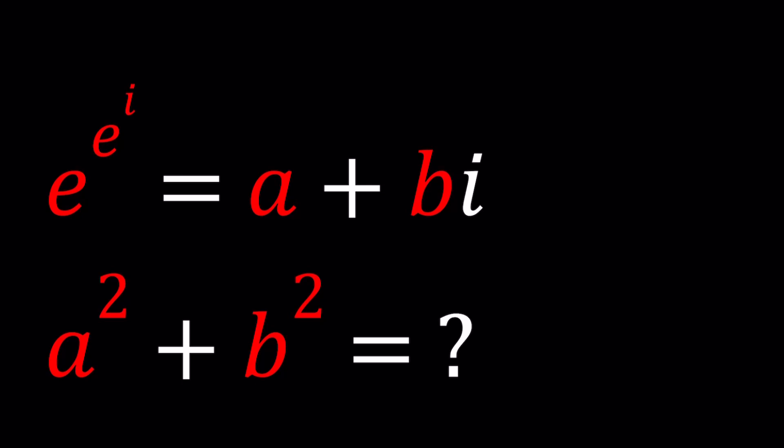We have a homemade problem today. e to the e to the i equals a plus bi, which is the name of this channel by the way, take note. And we're supposed to evaluate a squared plus b squared.